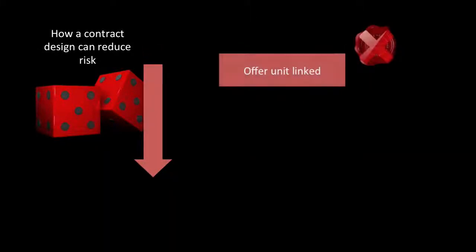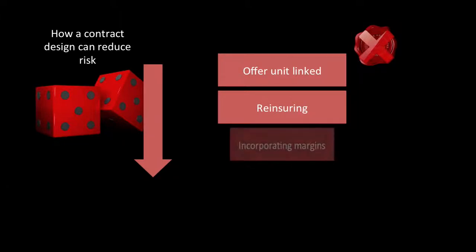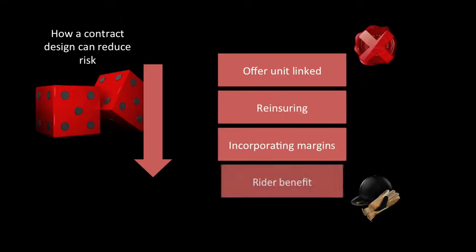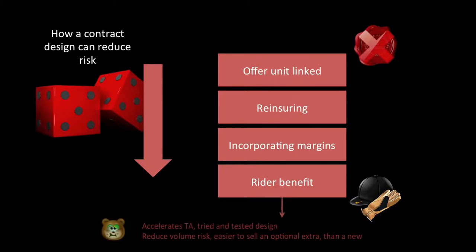Contract design can reduce risk. Offering unit-linked products removes the guaranteed element that with-profits contracts have. Reinsurance can also reduce risk, as can incorporating margins and rider benefits. Rider benefits are especially useful with a new product — for example, critical illness could be attached to a term assurance, which accelerates it. It is a tried-and-tested design and reduces the risk that we don't sell enough, as it's easier to sell an optional extra than a new standalone product.